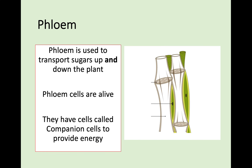The other plant vessel is called phloem. Phloem is used to transport sugar, and it transports sugar up and down the plant. Phloem cells are alive, in comparison to xylem cells being dead. Next to the phloem cells in the diagram are green parts called companion cells. The companion cells are there to provide energy, and that energy is required because the sugar is going up and down the plant. Xylem doesn't need that energy because it's just capillary action going up.